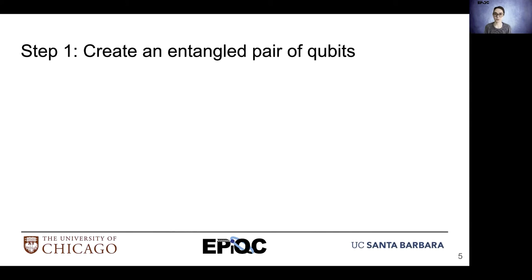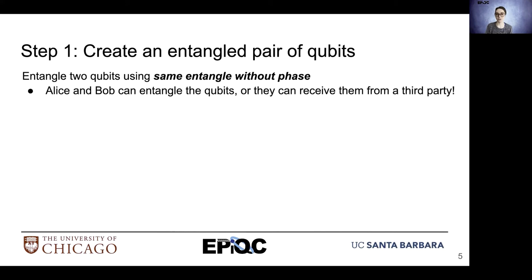Let's walk through the process of quantum teleportation. In step one, we need to create the entangled pair of qubits — we're going to create the entangled state without phase. Whenever we talk about this generation of entanglement, Alice and Bob can create the entangled pair, or they can receive it from another party.